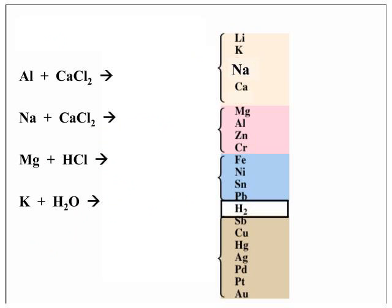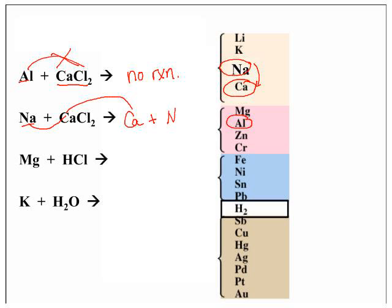So let's look at a few examples. You're going to place aluminum with calcium chloride. Looking at the activity series, you see that aluminum is below calcium. Therefore aluminum cannot replace calcium. What you would write to the right is no reaction. Sodium is above calcium. Therefore sodium can push calcium metal out of the compound and bond with the chloride ion.